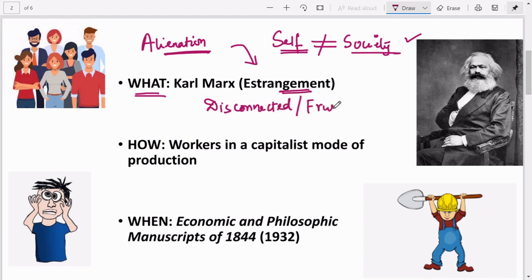But how do people gain alienation? Karl Marx says that in capitalist mode of production, workers face this problem a lot. When did he talk about it? In his famous book, The Economic and Philosophical Manuscripts of 1844, which was published in 1932.